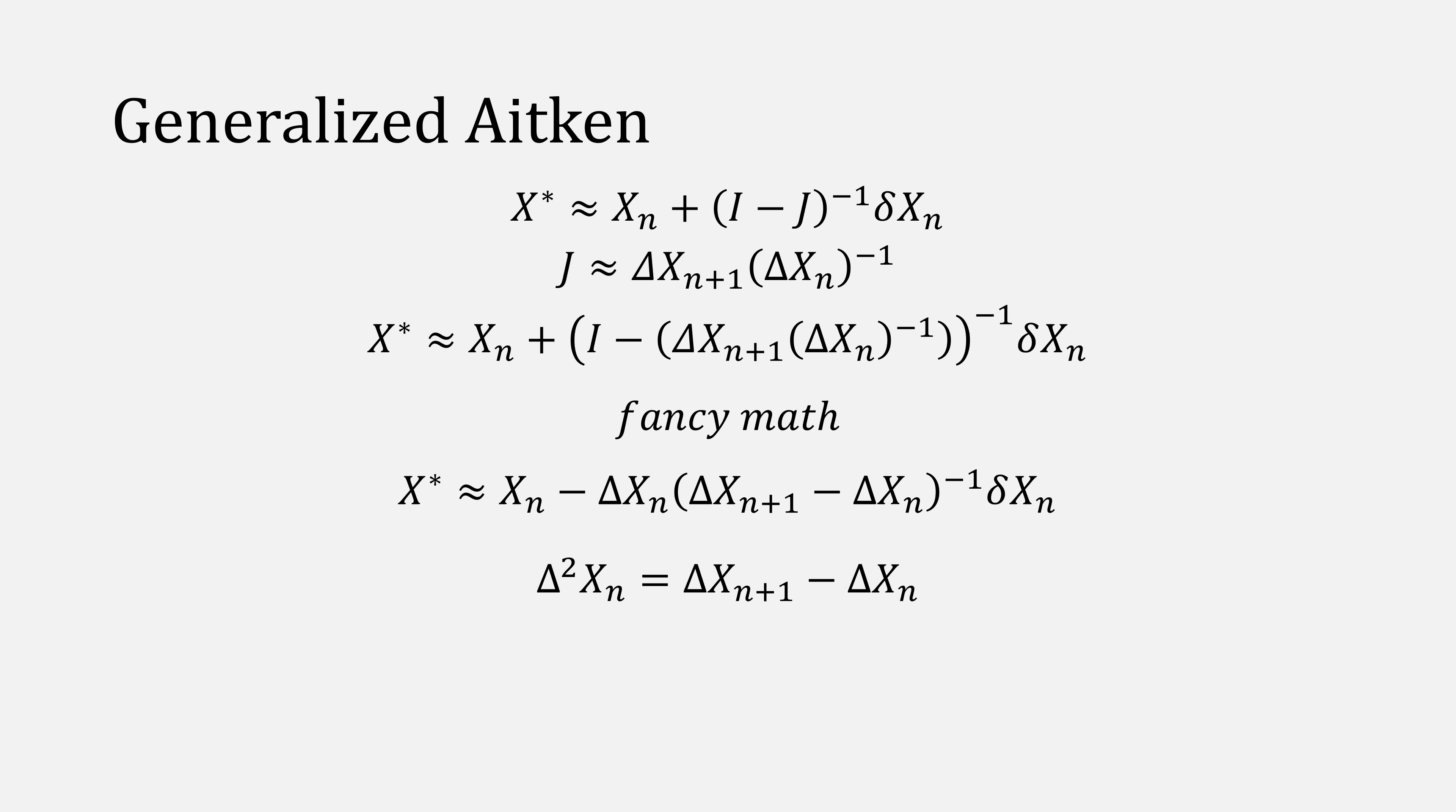Then, if we let delta squared x be the difference between two delta x's, we can simplify it yet again to be this approximation for x star. What this approximation is actually equal to, we'll call x hat.